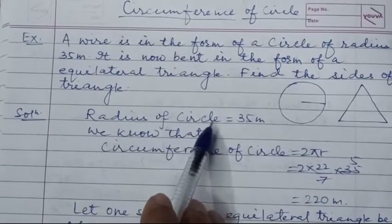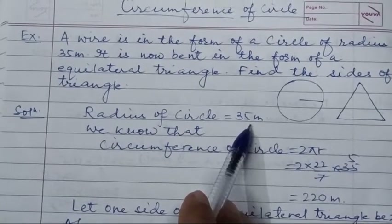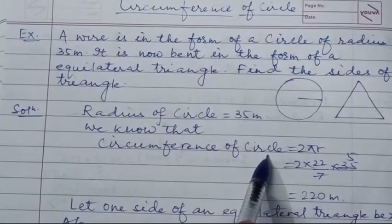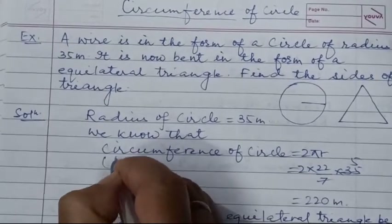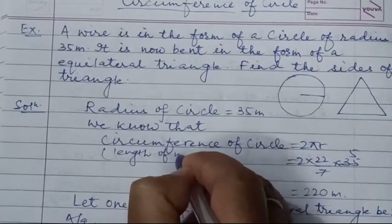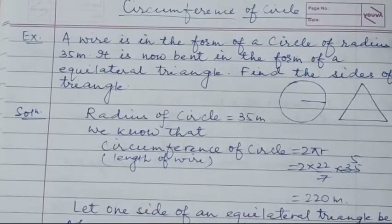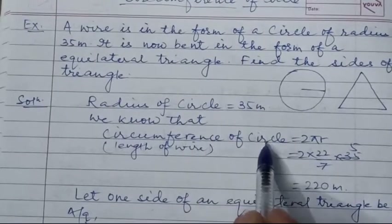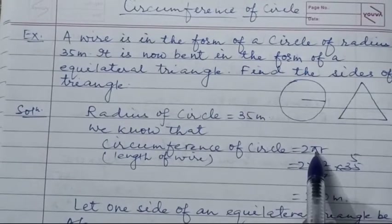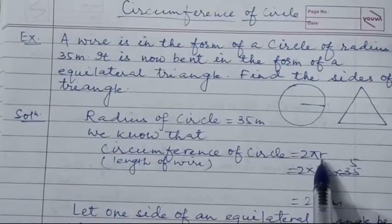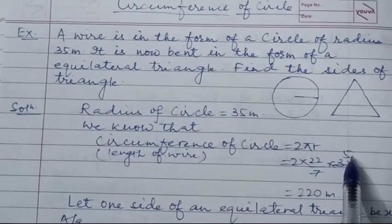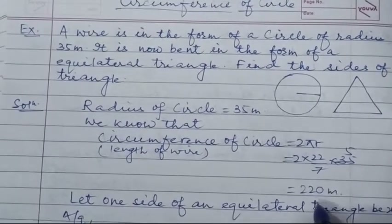Radius of circle is equal to 35 meters, which is given. We know that the circumference of circle is the length of wire in the form of a circle. Circumference = 2πr = 2 × (22/7) × 35 = 220 meters.